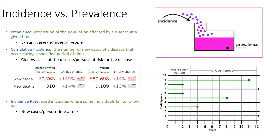Incidence rate is a similar statistic used when measuring incidence in a population where you lose track of certain people over time. In that case, you use person time at risk as the denominator. For example, if you keep in touch with someone for 11 months but lose them after that, you assign that person 11 person-months. You add up all person-months for your subjects, and that's your person time at risk.